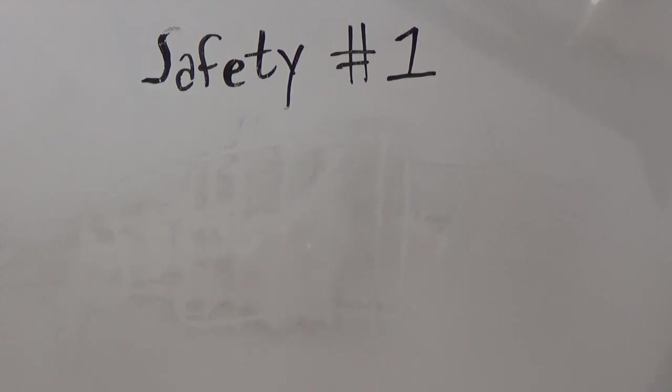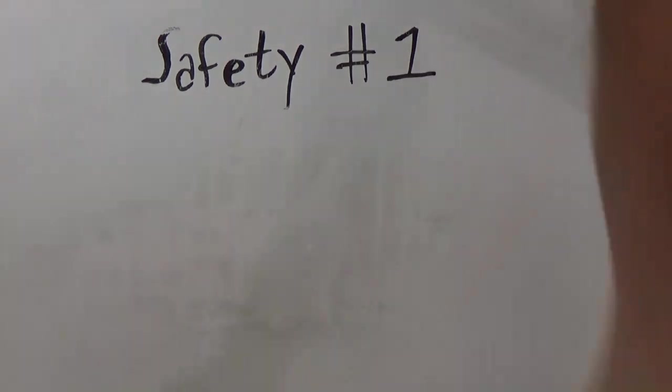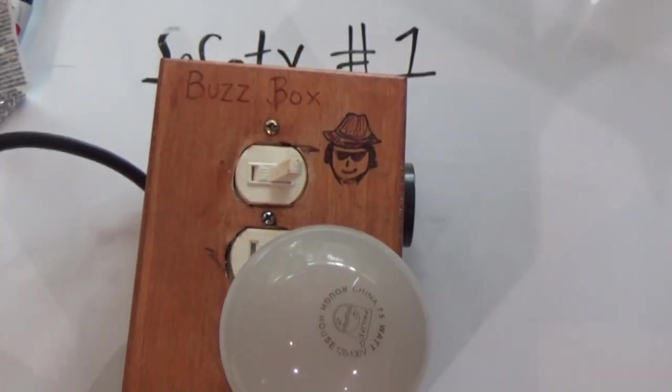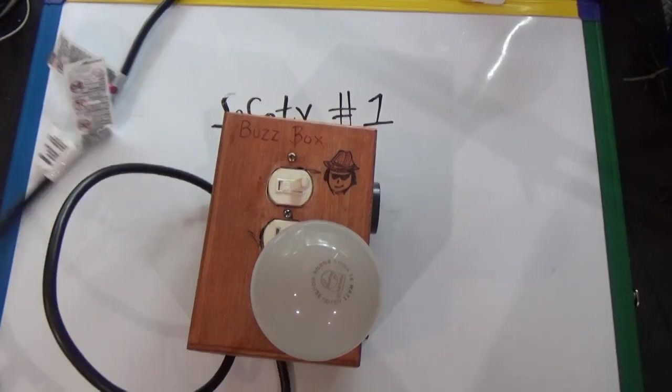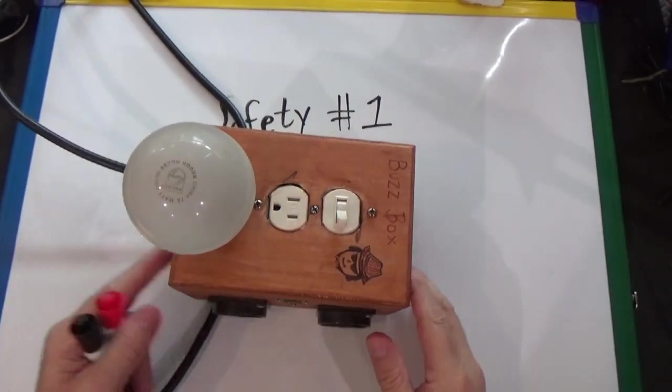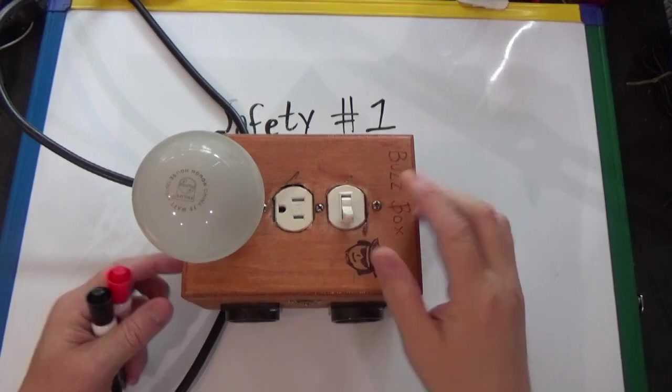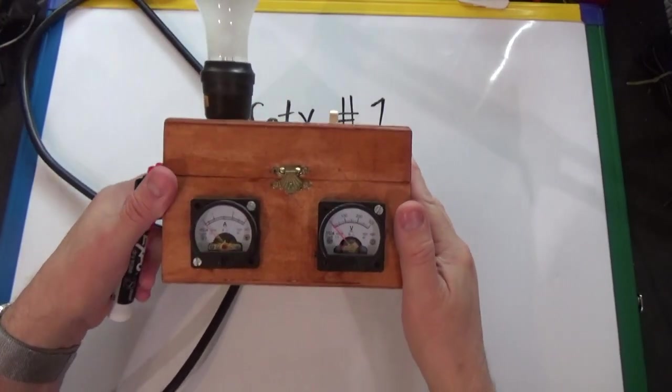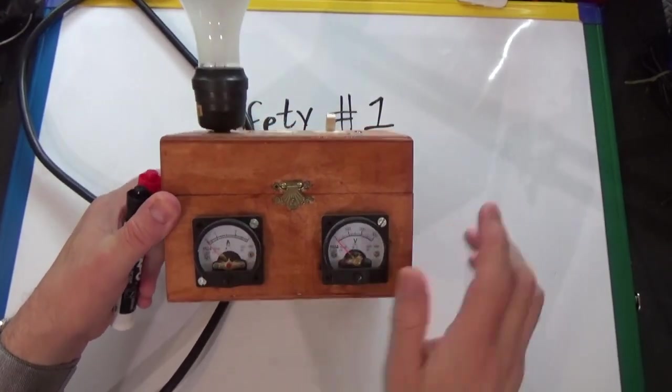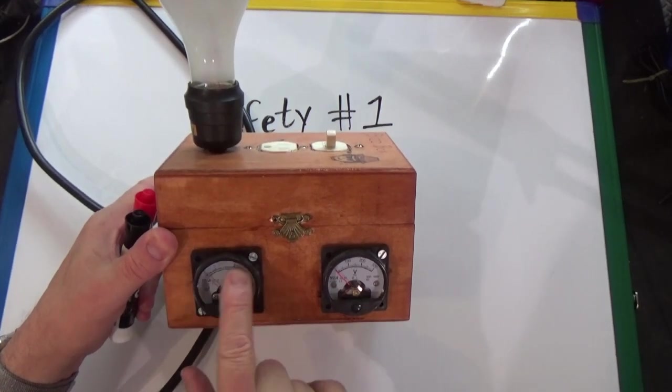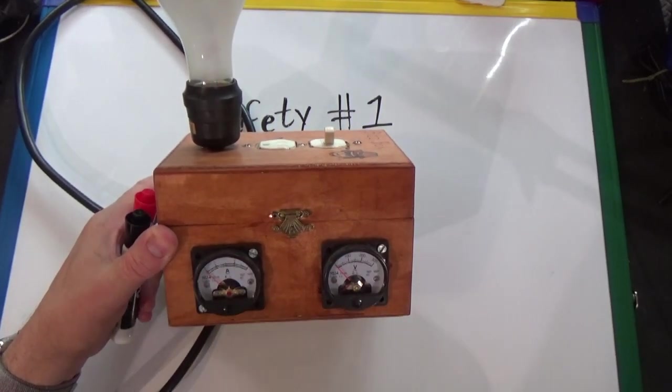So you always want to do your basic amp tests, plug it in, see if it's drawing any amps. You can use a dim bulb tester, which I have right here. I'll show you mine. This is a dim bulb tester. We call it the buzz box because I built it after Buzz's design. Basically, it's a light bulb, switch and an outlet. And over here I have amps and volts.